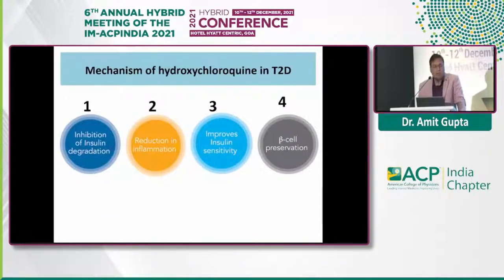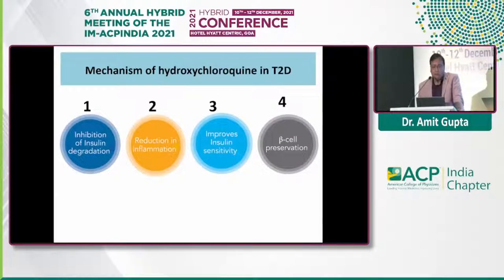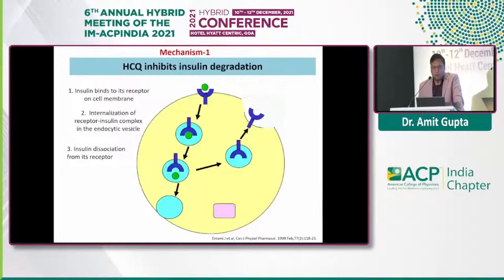What is the mechanism of hydroxychloroquine in type 2 diabetes? There are four proposed mechanisms: inhibition of insulin degradation, reduction of inflammation, improvement of insulin sensitivity, and beta cell preservation.